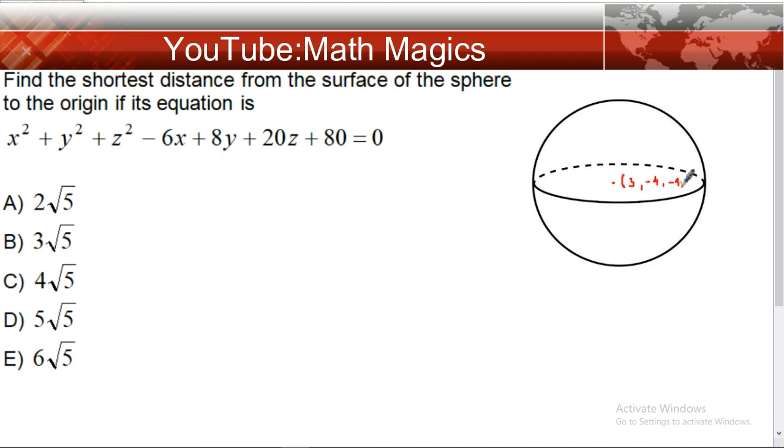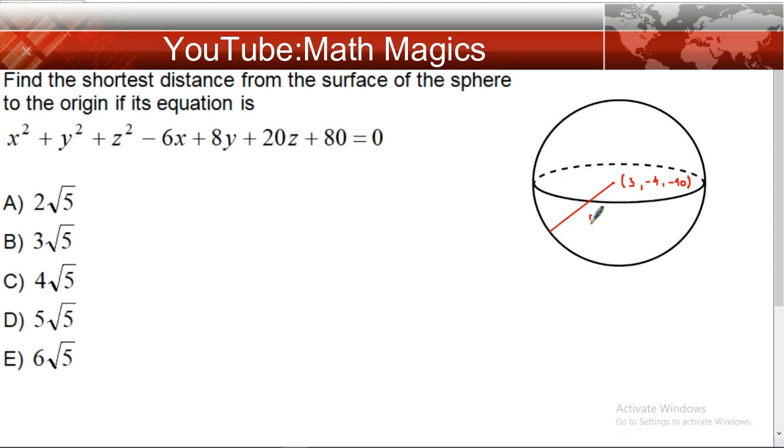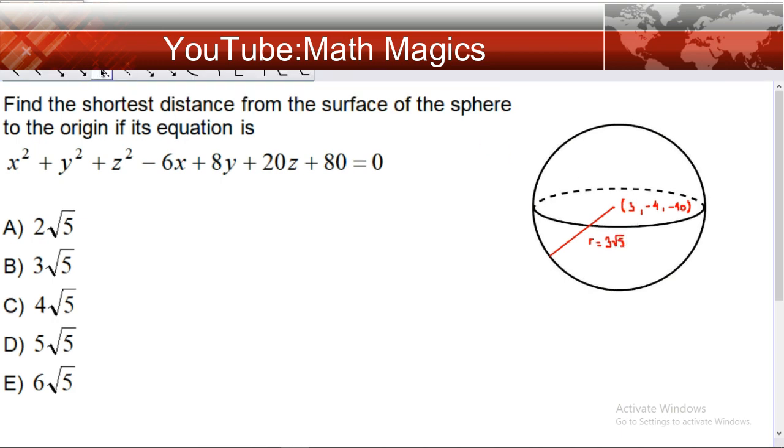center is (3, -4, -10) and the radius is 3√5. And another point—we need to find the distance from center to origin.